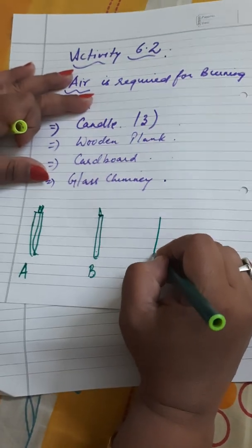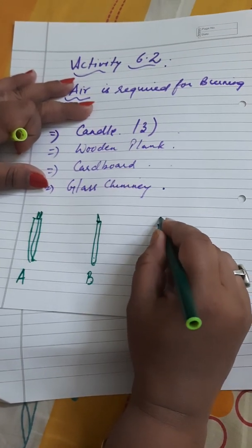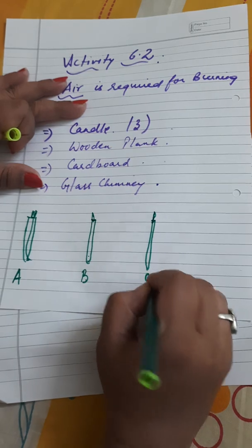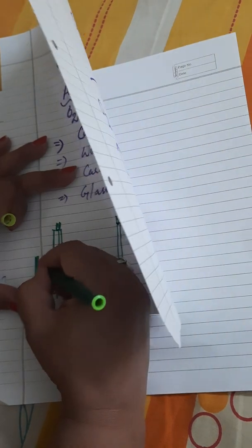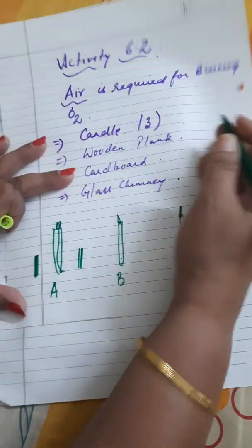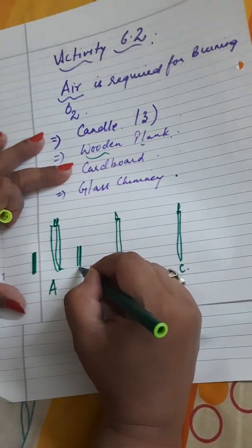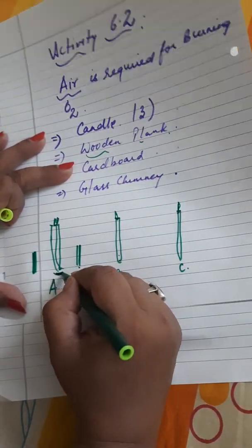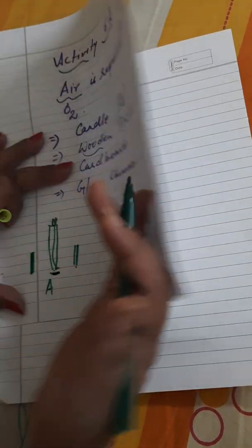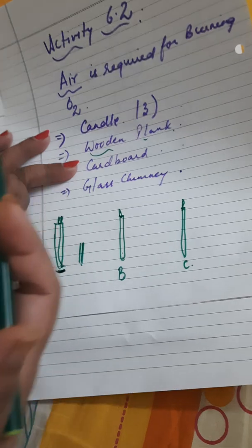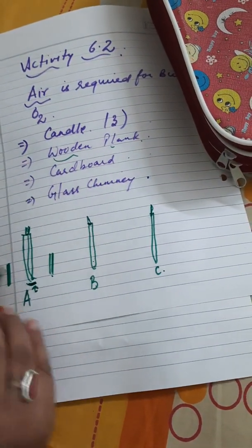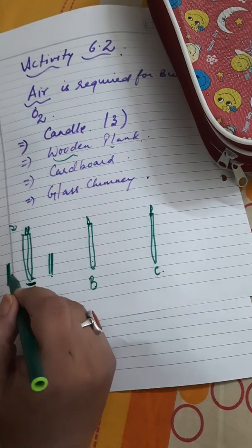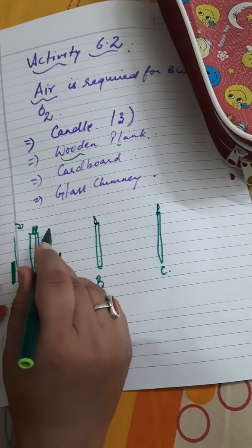The third one, you will name candle C. For the first one, you will put a wooden plank in such a way that the bottom of this area also remains open. The candle should be seen a little bit above so the air can enter from the bottom as well as from the top. Now we will cover it with a glass chimney.